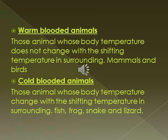Warm blooded animals are those whose body temperature does not change with the shifting temperature in their surroundings. They have a temperature control mechanism to keep their body temperature at a constant level. Mammals and birds are warm blooded. For example, polar bears and dolphins have a thick layer of fat called blubber to keep them warm.